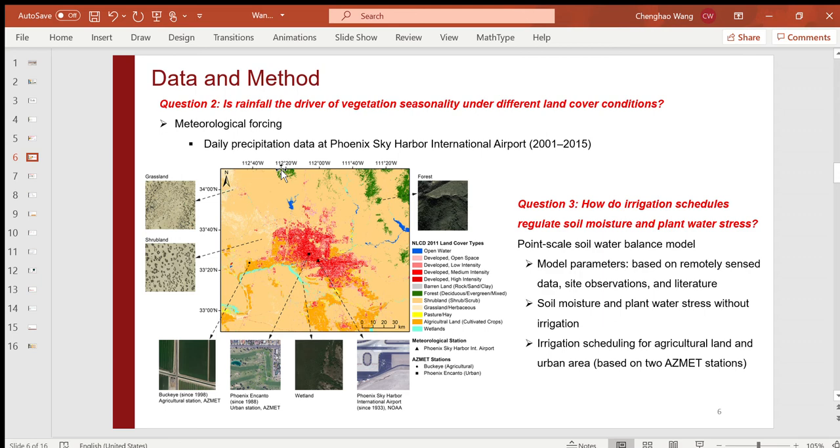For the last question, I used a modified point scale soil water balance model that incorporates an irrigation module. This model can simulate the dynamics of soil moisture and plant water stress. The model parameters are mainly based on remotely sensed datasets, site observations, and literature. Irrigation scheduling is determined for agricultural land and urban areas based on two Arizona Meteorological Network or AZMET stations.